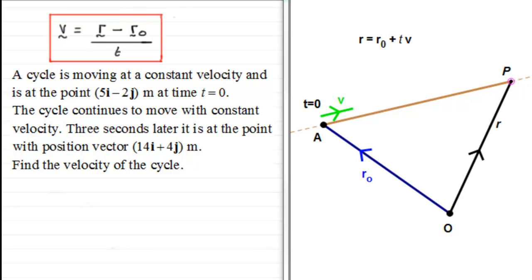So to do this, if we just denote that velocity as being v, then it's going to be equal to the change in the position vectors. So we take the position vector after three seconds, which is 14i plus 4j. So we just put that in as 14i plus 4j.